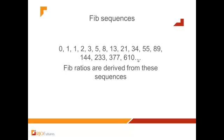The sequences are as follows — you've seen this in a lot of places. For those of you who haven't, here's a quick review: the sequence starts 0, 1, 1, 2 — we just keep adding the numbers. So 0 plus 1 is 1, 1 plus 1 is 2, 1 plus 2 is 3, and the sequence continues.